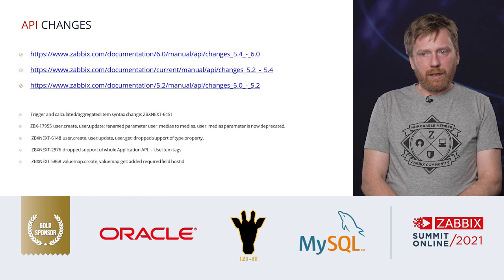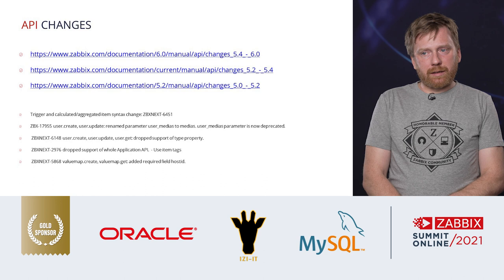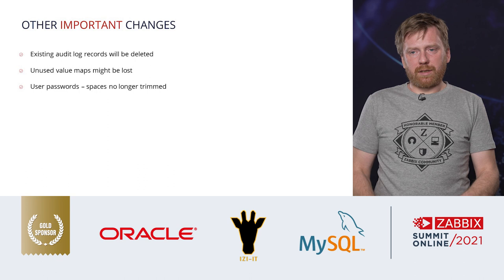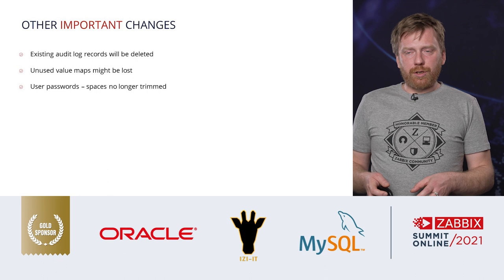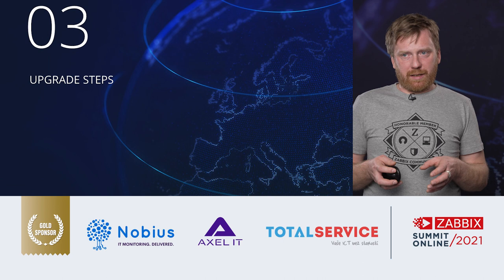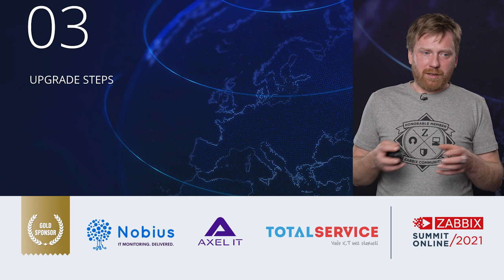Value maps are no longer global — they now require a host ID, which can be a template or a host. Also, because we have set up user password complexity requirements, we fixed a long-standing behavior where Zabbix used to silently trim trailing spaces from passwords. It no longer does that, so if you had a space at the end of your password, it might no longer work and you may need to update it.